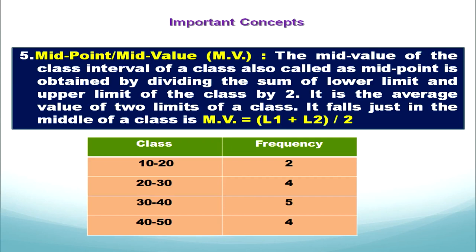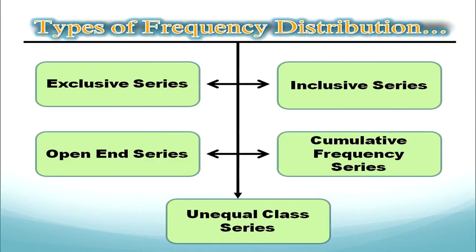We also observe that for the first class the mid value was 15 and for the next class it was 25 — a gap of 10. Each class has the same gap, so once we know the first midpoint, if the series is exclusive we can easily determine subsequent mid values: 15, 25, 35, 45.